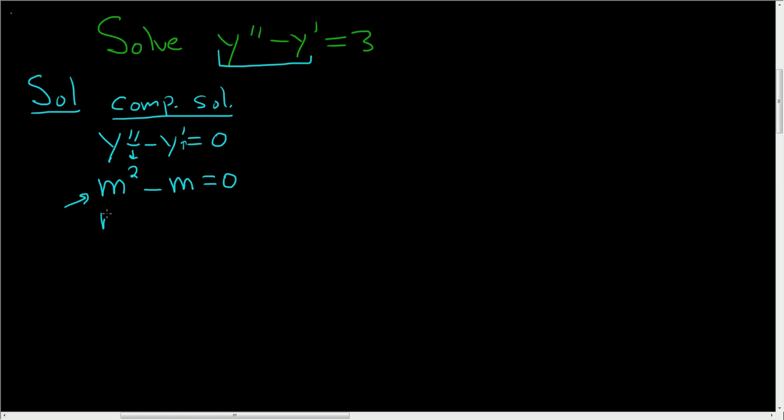To solve this equation, we factor out the m, and so here we get m equals zero, m equals one. So we have distinct real roots.